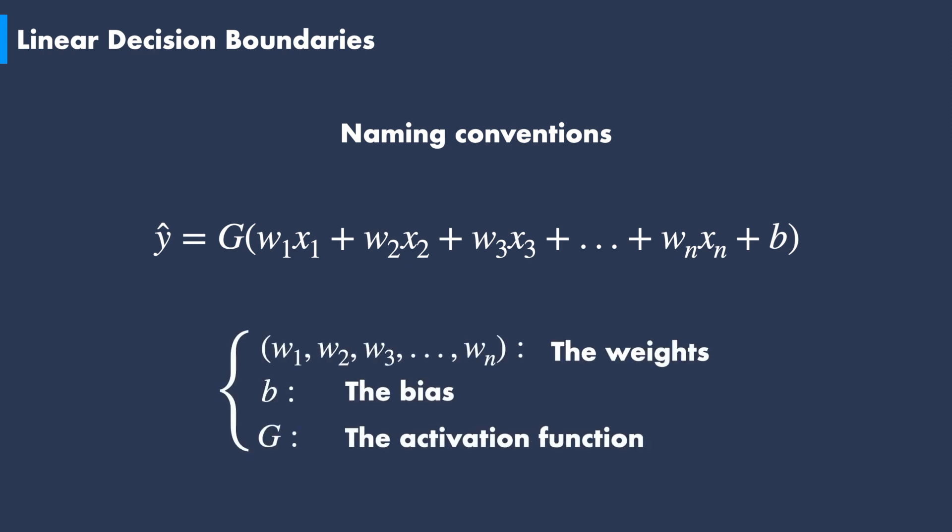Throughout this series, we will adopt the same naming conventions you are likely to see in the literature of deep learning. w1, w2, and so on up to wn are called the weights. They define the contribution strength for each input term, such as weak, strong, or null.